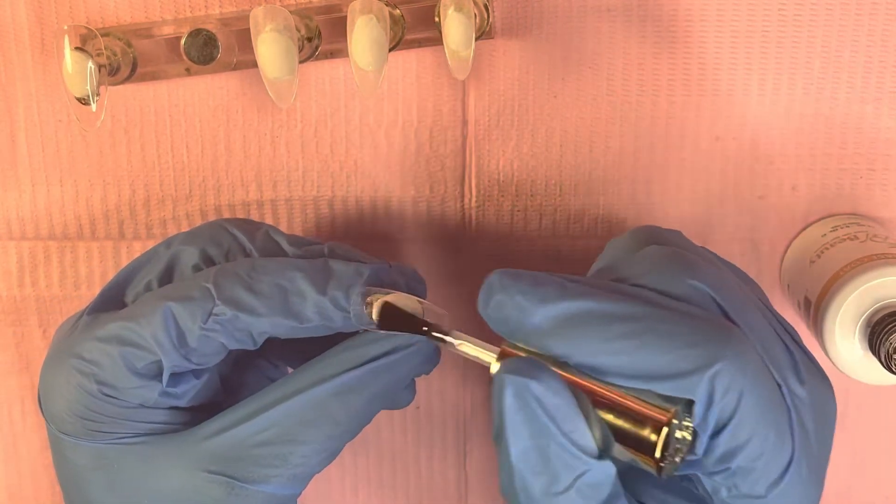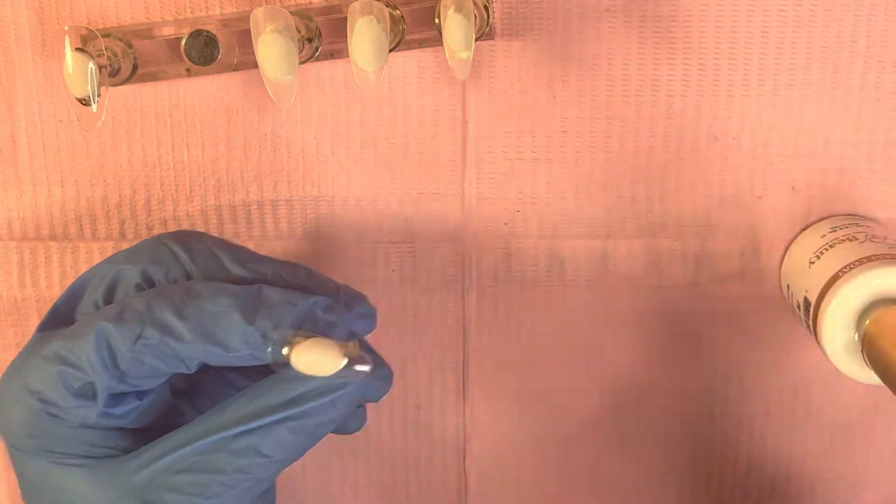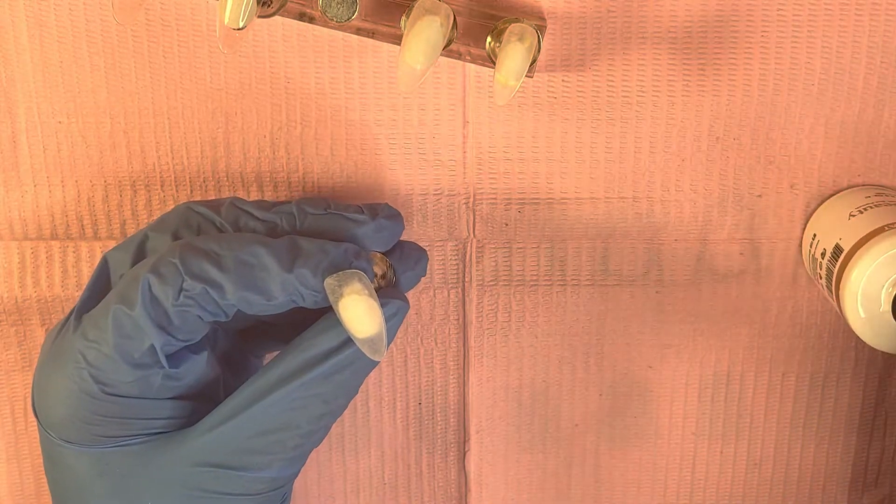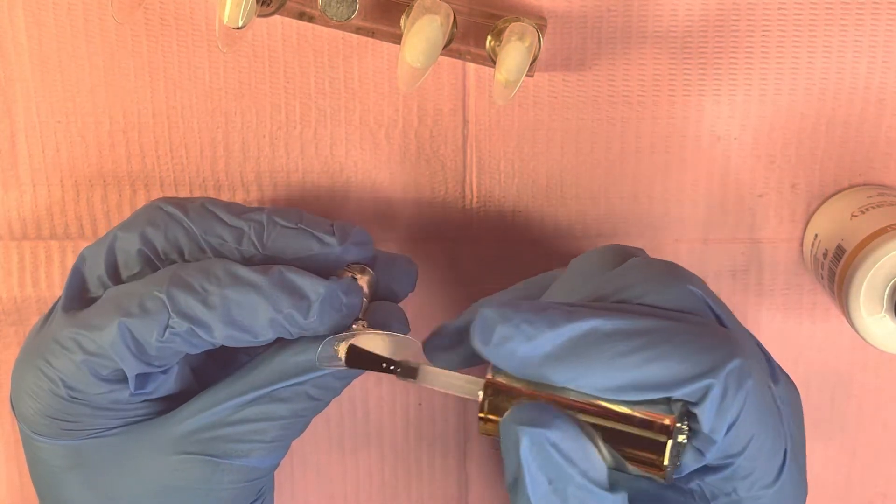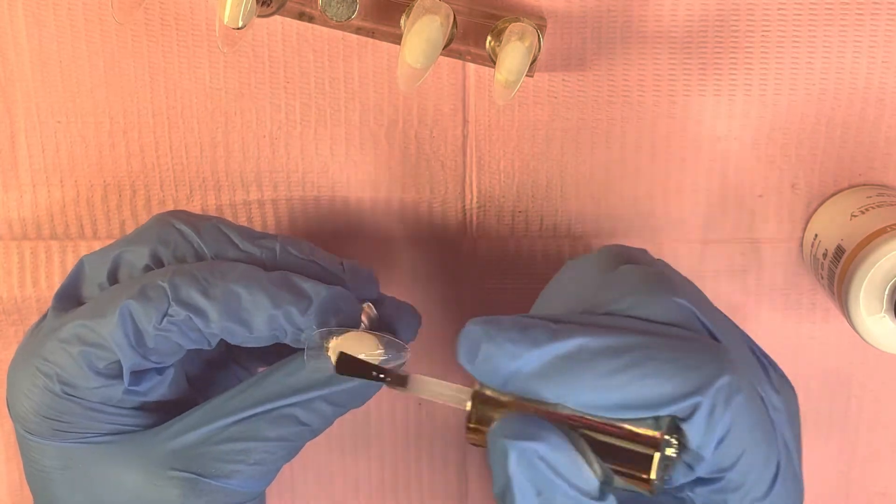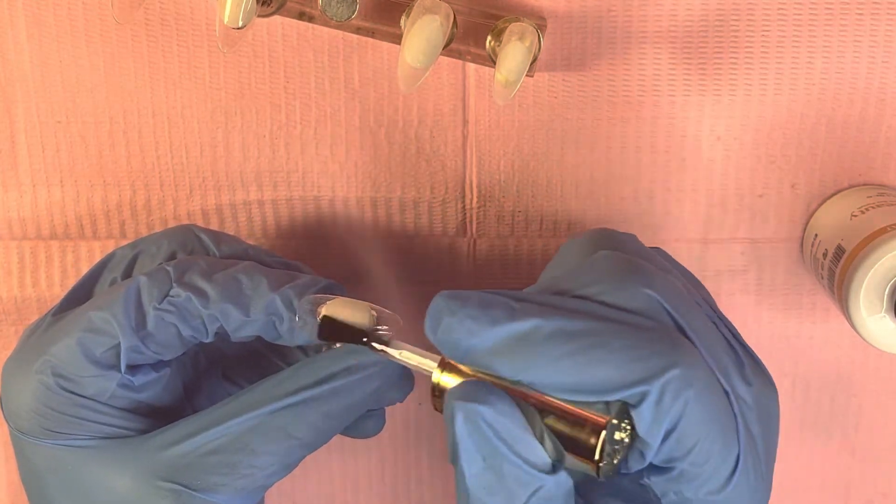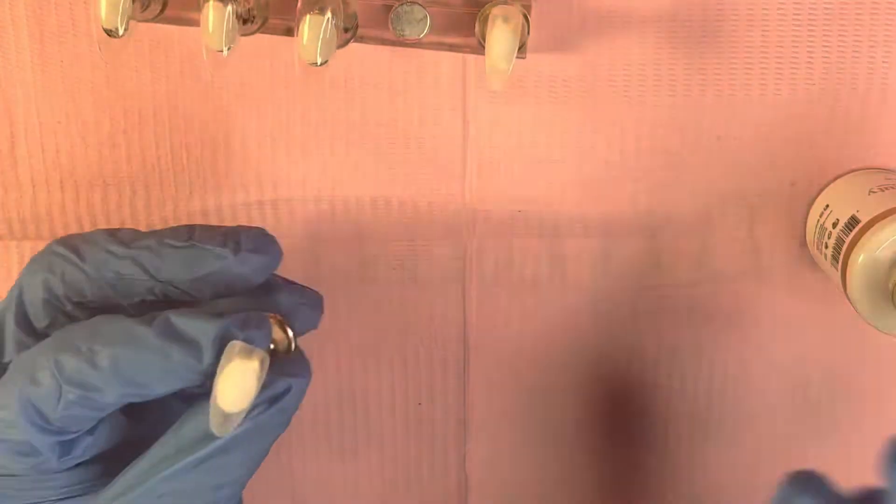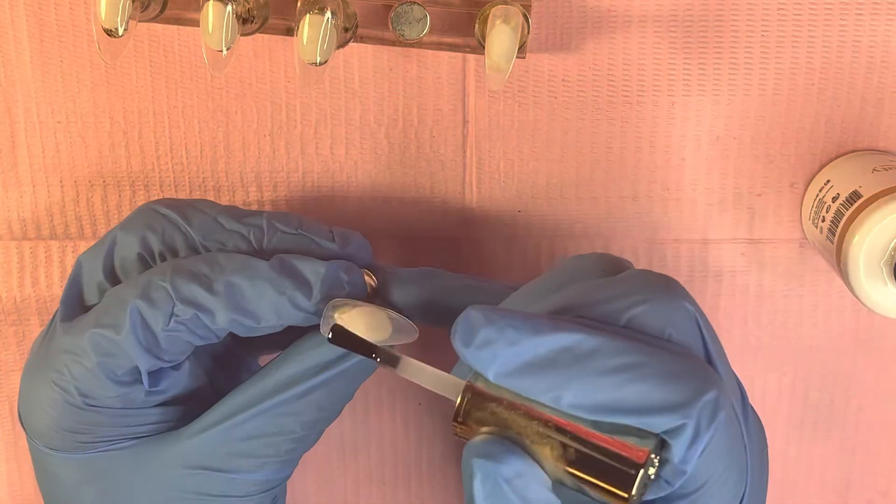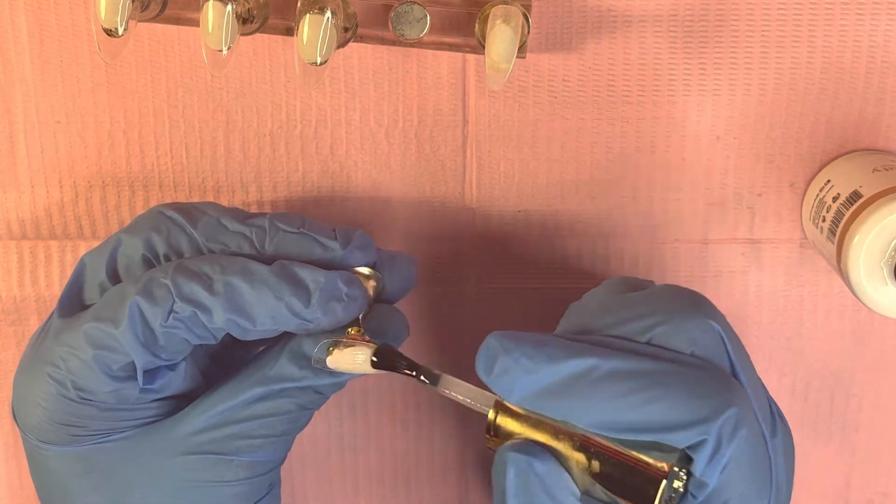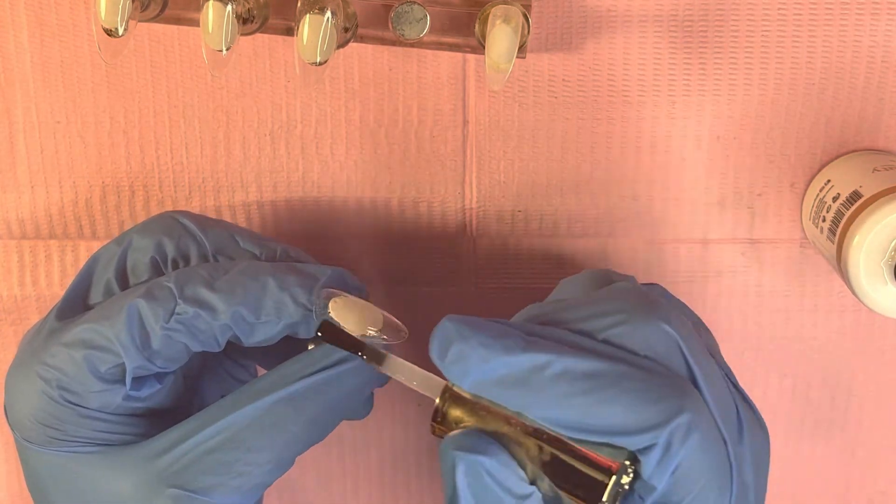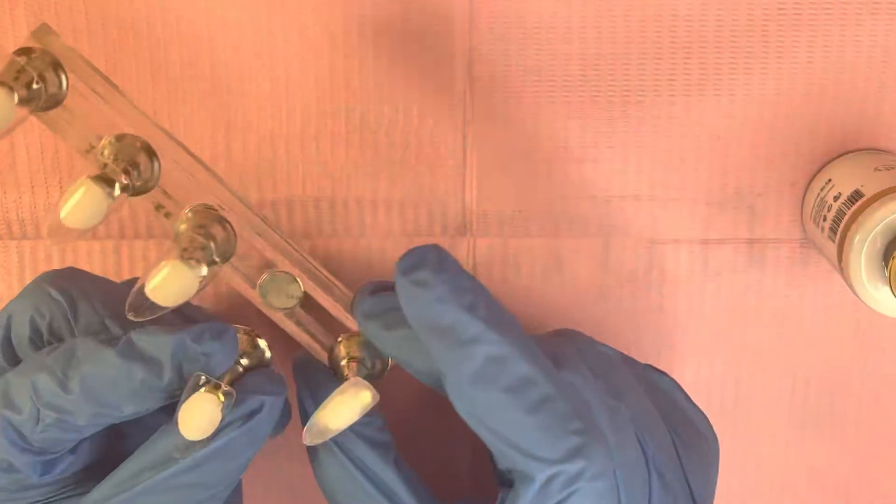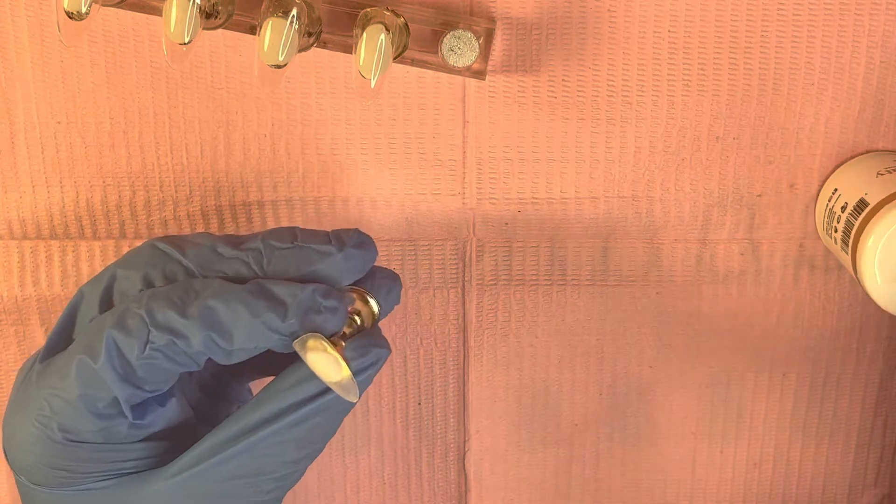I'm just going to go ahead and apply my base coat. And this is going to be a full gel based set. I do do acrylic sets as well, but today we're going to be doing a full gel based set. I apply the base coat so that everything can seal on to the nail and it doesn't lift. It just helps with overall quality. I'm going to let them cure in my iGel Beauty gel machine for 30 seconds two times.